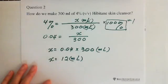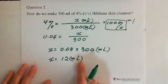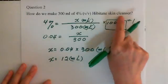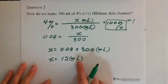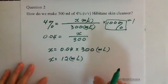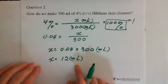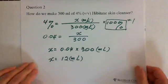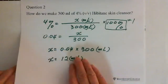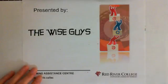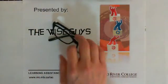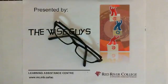That means we measure 12 milliliters of Hibitane skin cleaner, which is the concentrated form, put it in a beaker, and then add water to bring the total volume to 300 milliliters. This is presented by Wiseguides. Thanks for watching, have a nice day. See you next time.